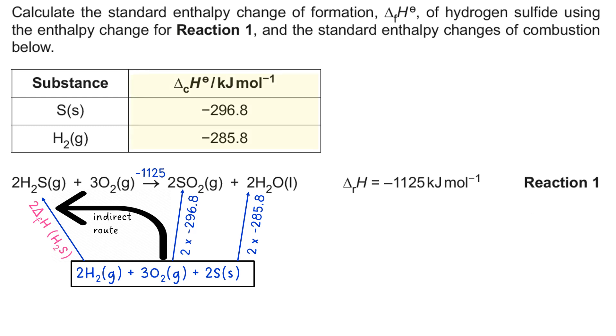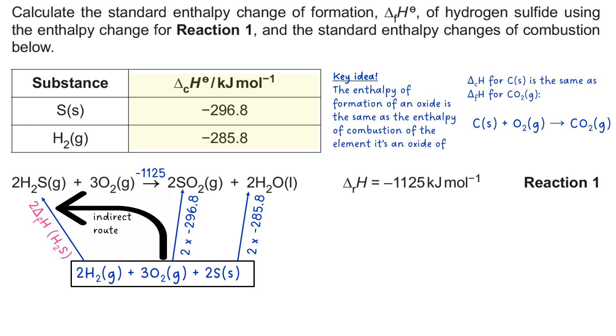Coming back to these ΔcH values, the key idea is that the enthalpy of formation of an oxide is the same as the enthalpy of combustion of the element it's an oxide of in the first place.